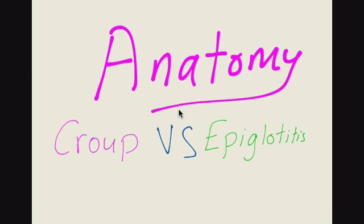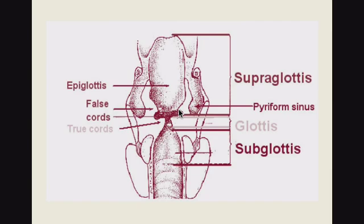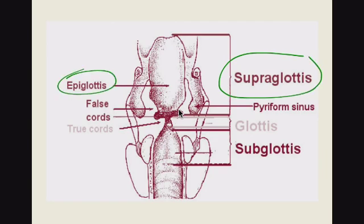First of all I will talk about the anatomical differences. Croup has another name which is acute laryngeal tracheobronchitis, which implies that croup affects both the subglottic space plus or minus the tracheobronchial tree, while epiglottitis will affect the epiglottis. As you can see from this graph, the subglottic area is affected by croup while the supraglottic area is affected in epiglottitis.